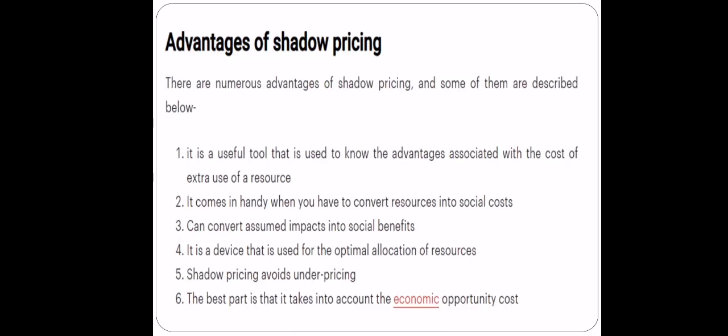What are the advantages of shadow price? It is a useful tool which helps to know what benefits are associated with the extra use of a resource — like what is the benefit of making an employee work overtime. It comes in handy when you have to convert resources into social cost, and you can convert assumed impacts into social benefits. It is a device used for the optimal allocation of resources and avoids underpricing. Companies generally overestimate the price because they see their long-term benefits in that particular service. The best part is that it takes into account the opportunity cost.